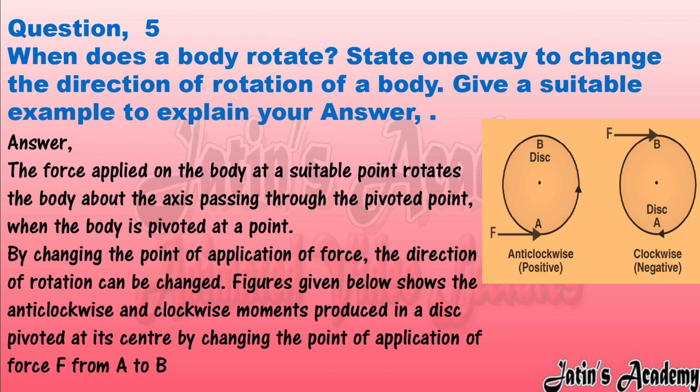Answer: the force applied on the body at a suitable point rotates the body about the axis passing through the pivoted point. When the body is pivoted at a point, by changing the point of application of force the direction of rotation can be changed. The figures show anticlockwise and clockwise moments produced in a disk pivoted at its center by changing the point of application of force F from A to B.